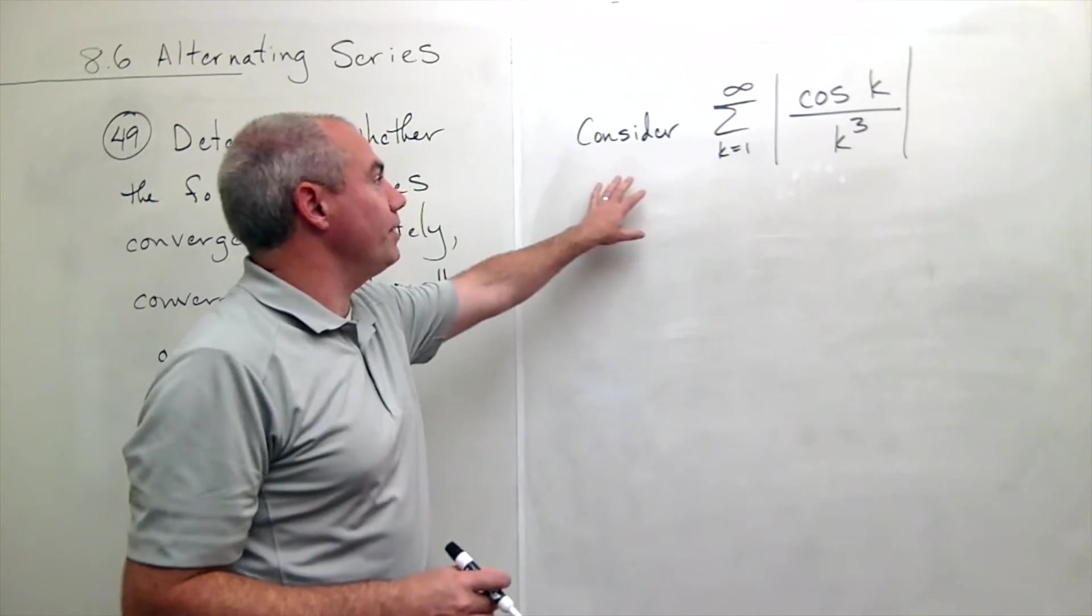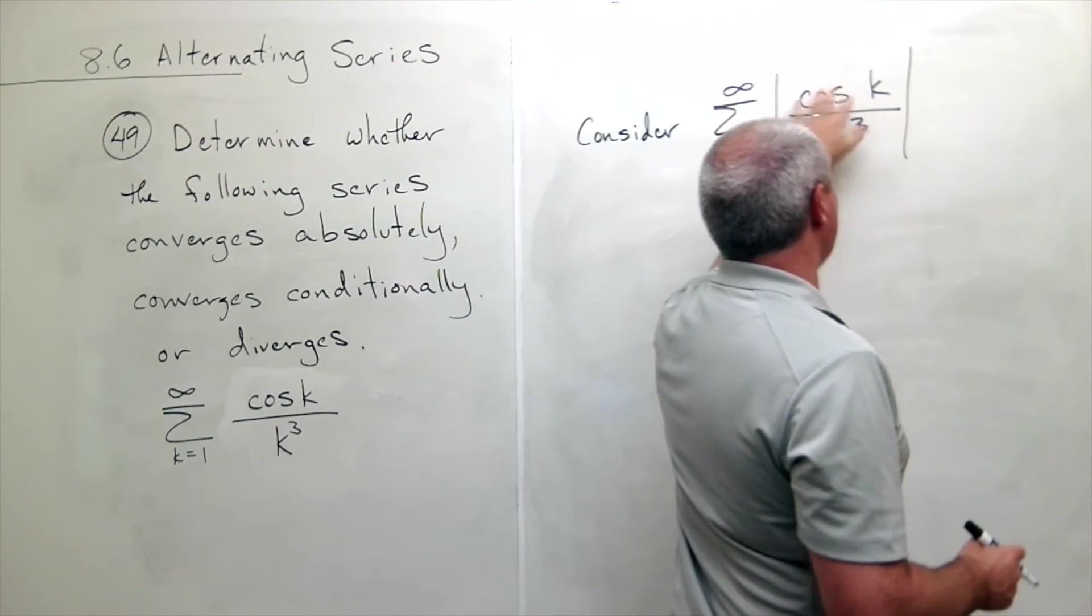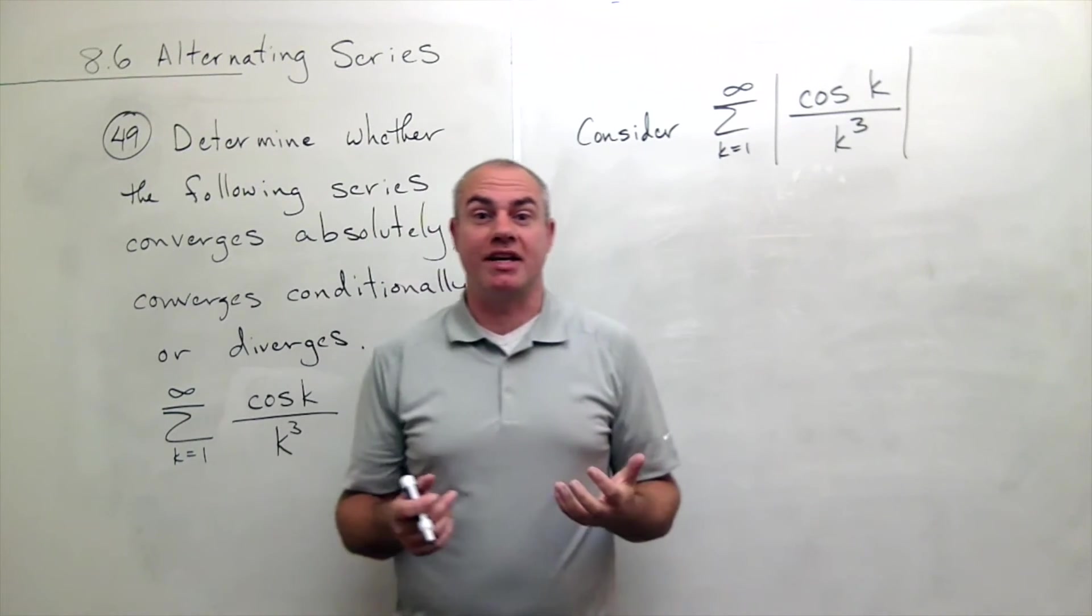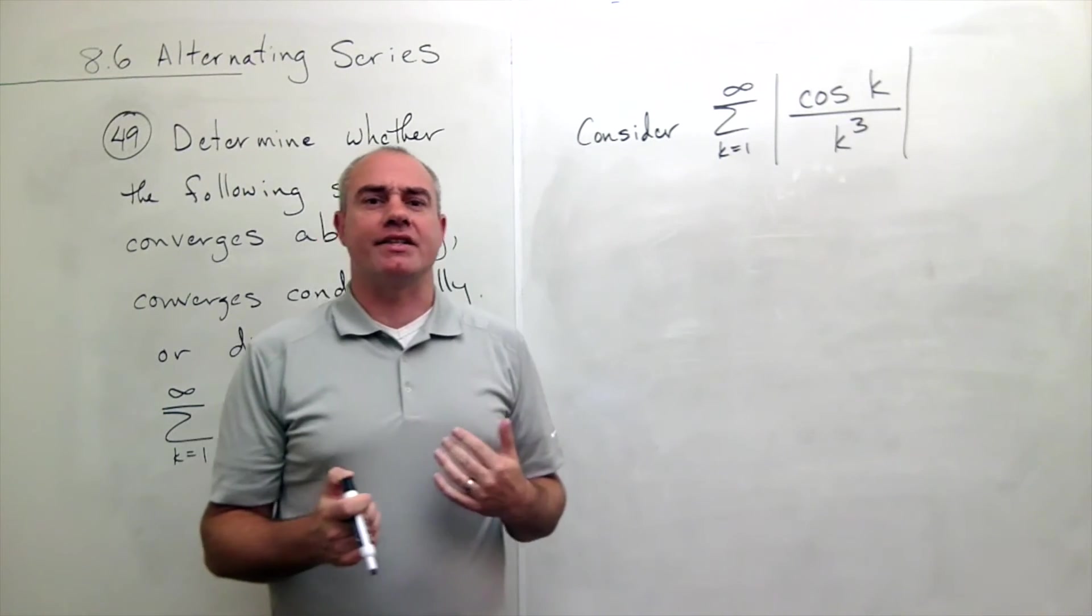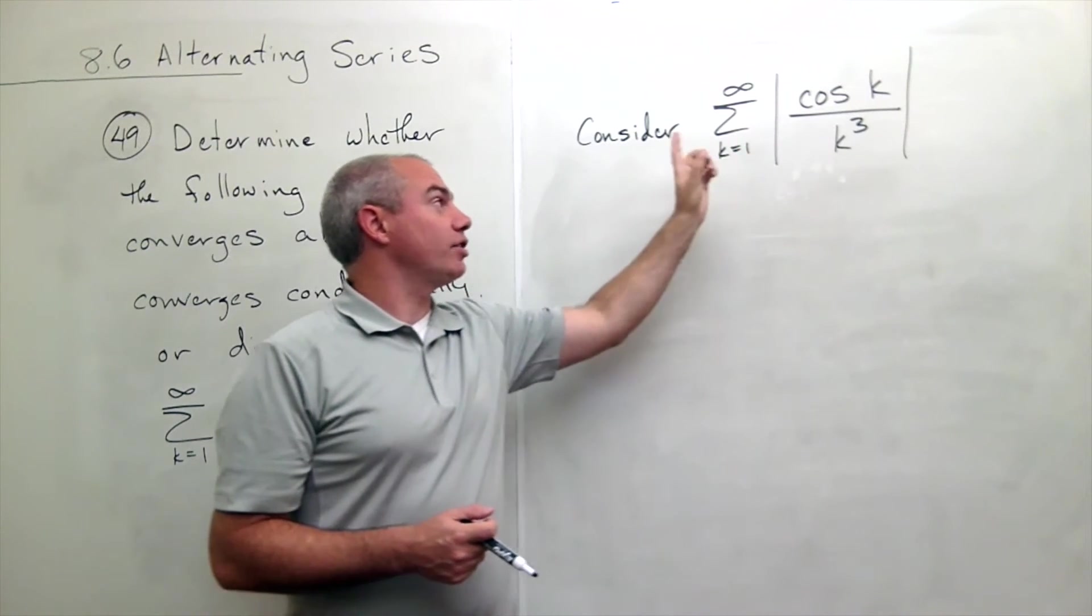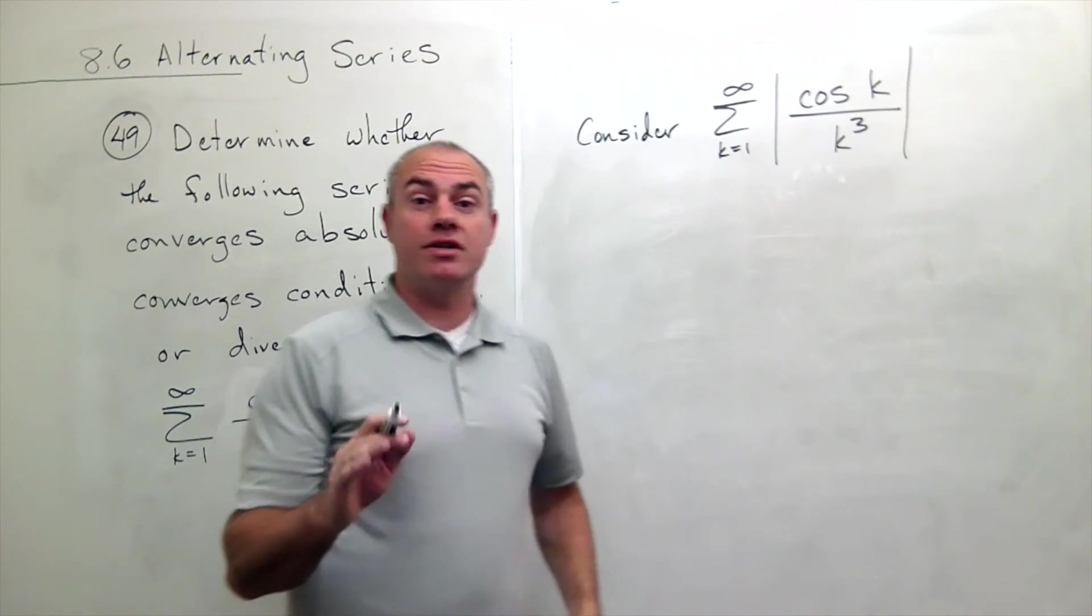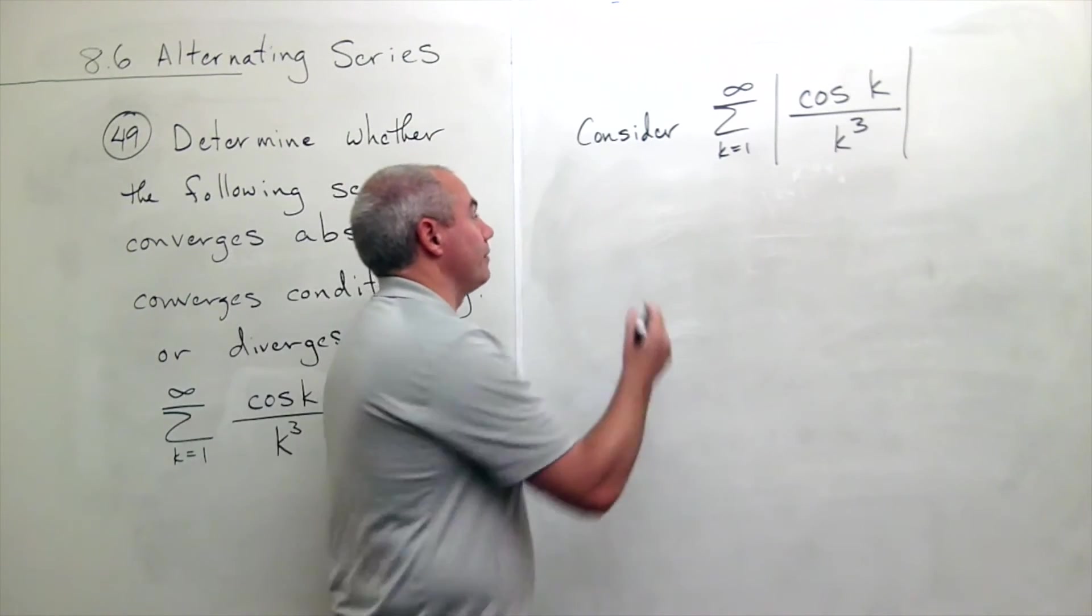So what I'm going to do here is now that I've got all of these cosine k's to be positive by taking the absolute value, I can say one thing I know for sure: they're all positive and cosine of k is certainly less than 1. So see if you agree with what I am about to write.